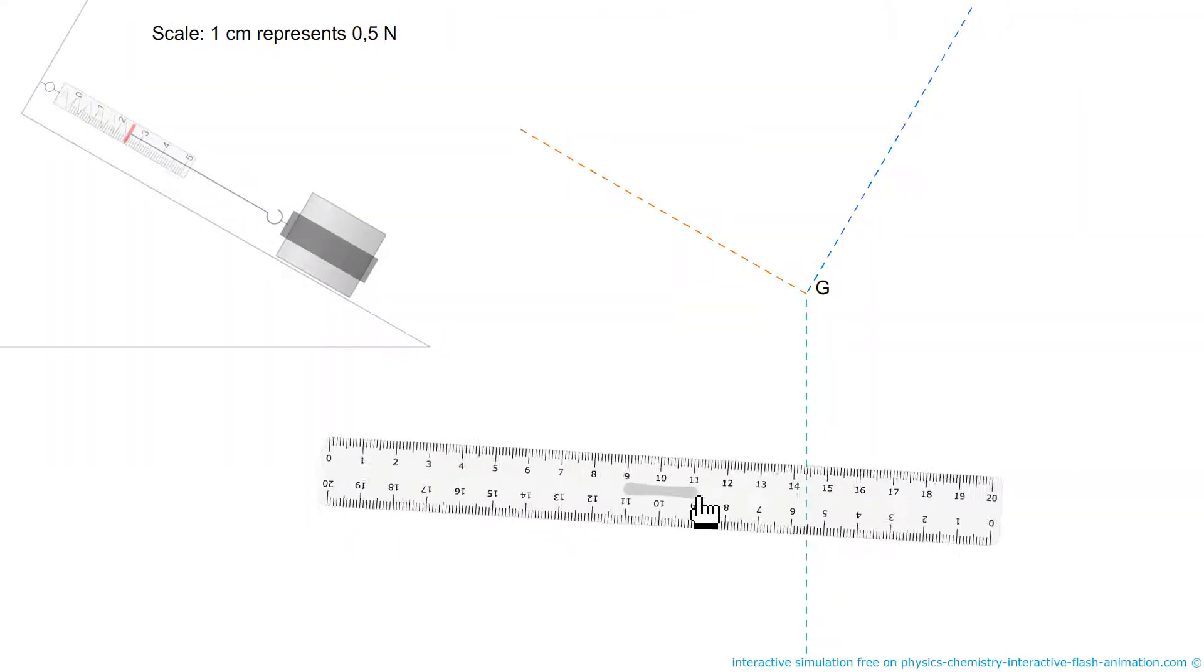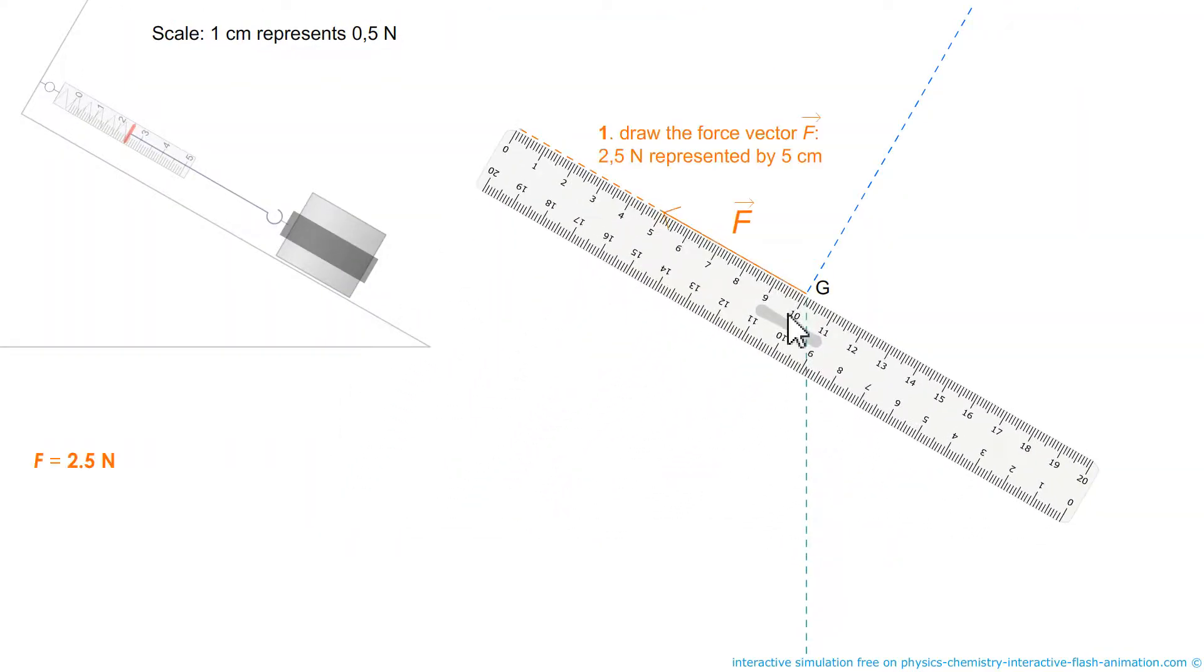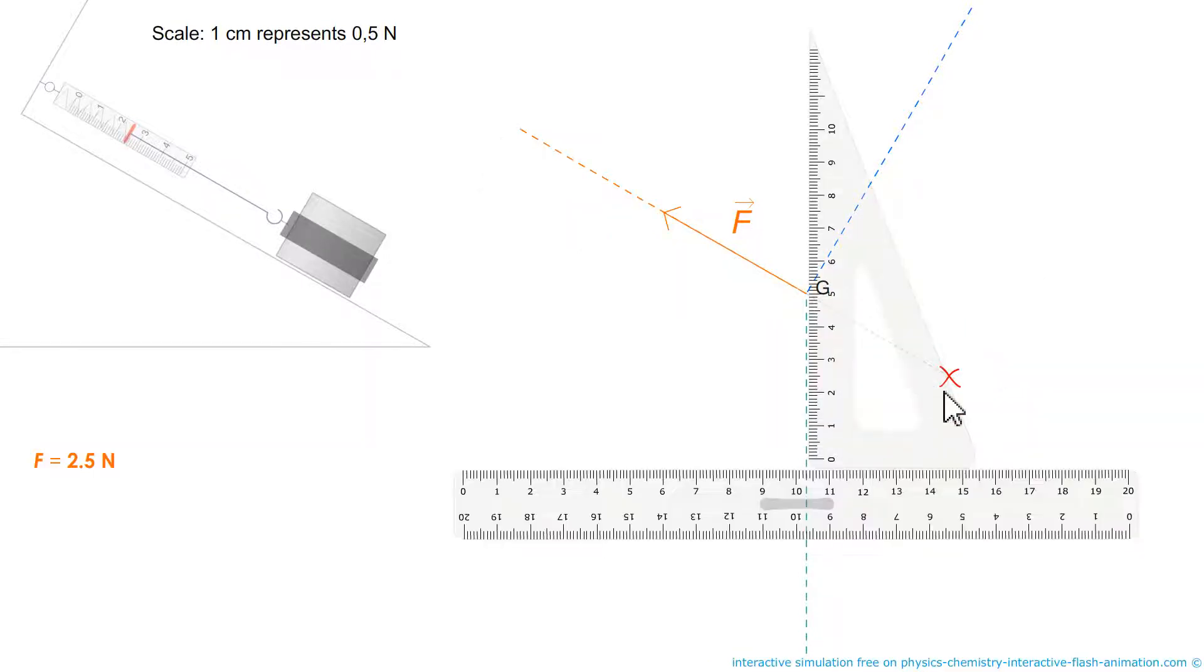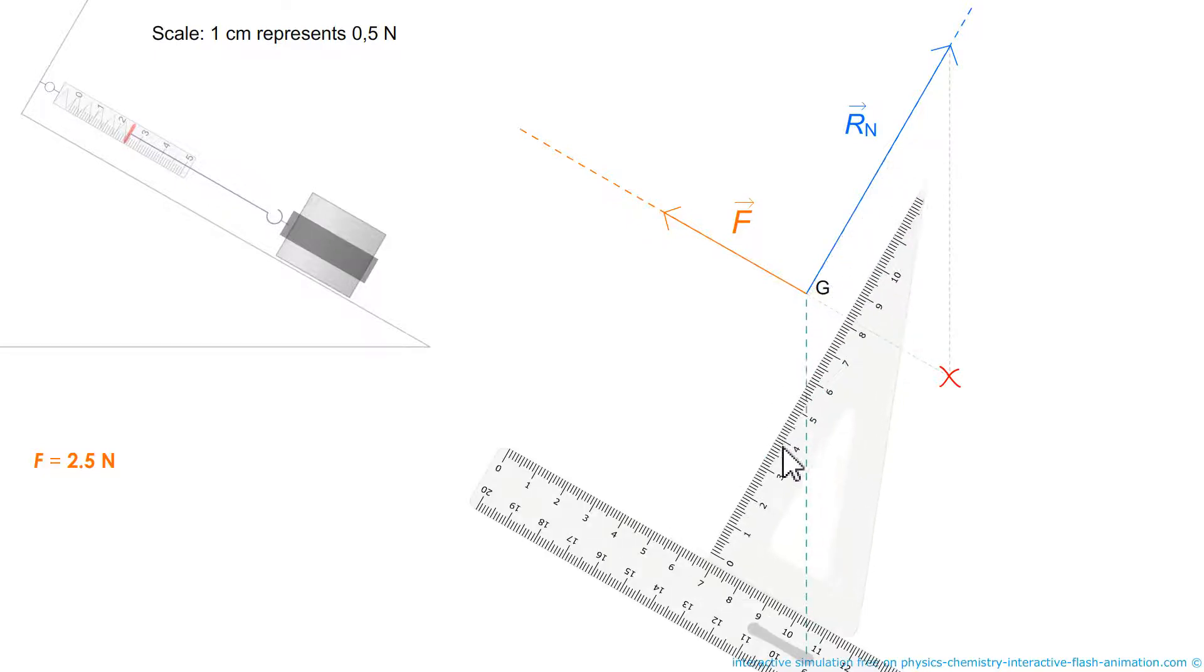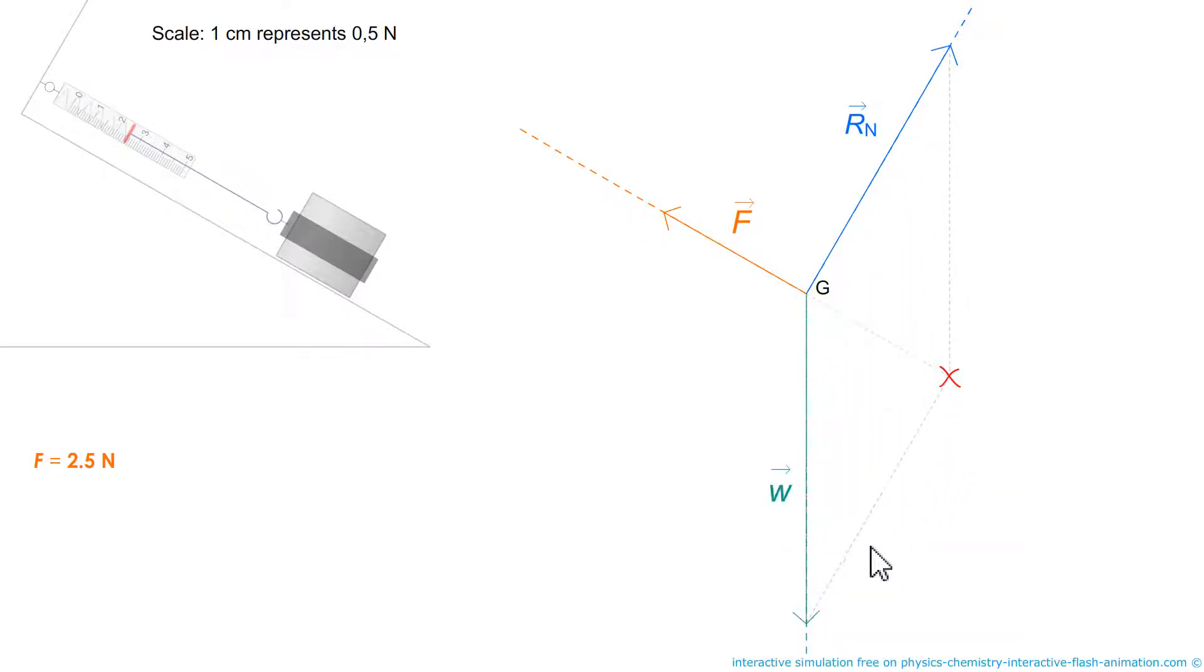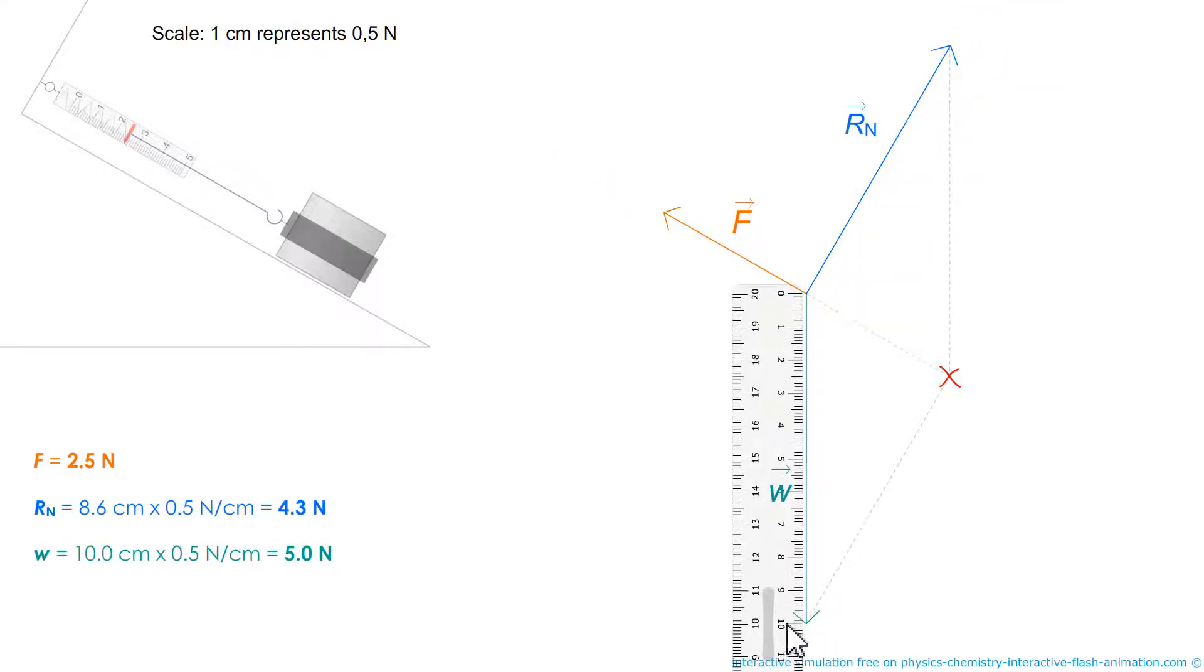We will see that here. For construction, we first build a known vector, the force of the spring scale. We mark the opposite minus F because the sum of the other two must be opposed to F. The square first slides on the rule. We can build a parallelogram. We measure 8.6 centimeters for one, 10 centimeters for the other. We apply the given scale and we get the forces. It is a graphic method.